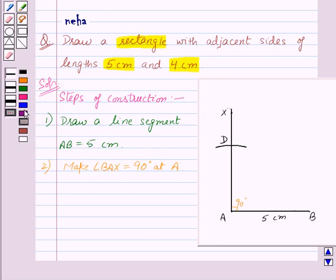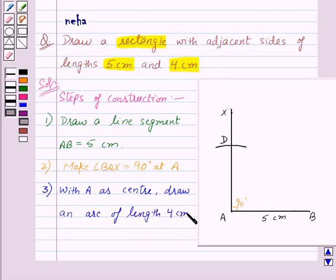So let us write our third step of construction. That is, with A as center, draw an arc of length 4 cm to cut AX at point D.